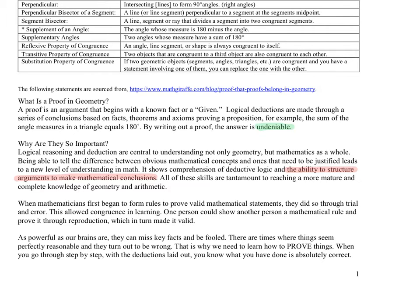As powerful as our brains are, they can miss key facts and be fooled. There are times when things seem perfectly reasonable and they turn out to be wrong - that's why we need to prove things. When you go through step by step with deductions laid out, you know you've done everything absolutely correctly.